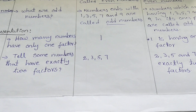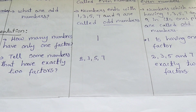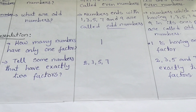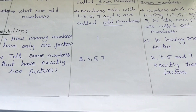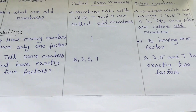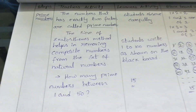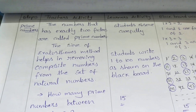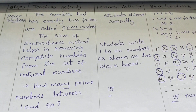How many numbers have only one factor? One is having one factor. Tell some numbers that have exactly two factors: 2, 3, 5, 7. The numbers that have exactly two factors are called Prime Numbers.